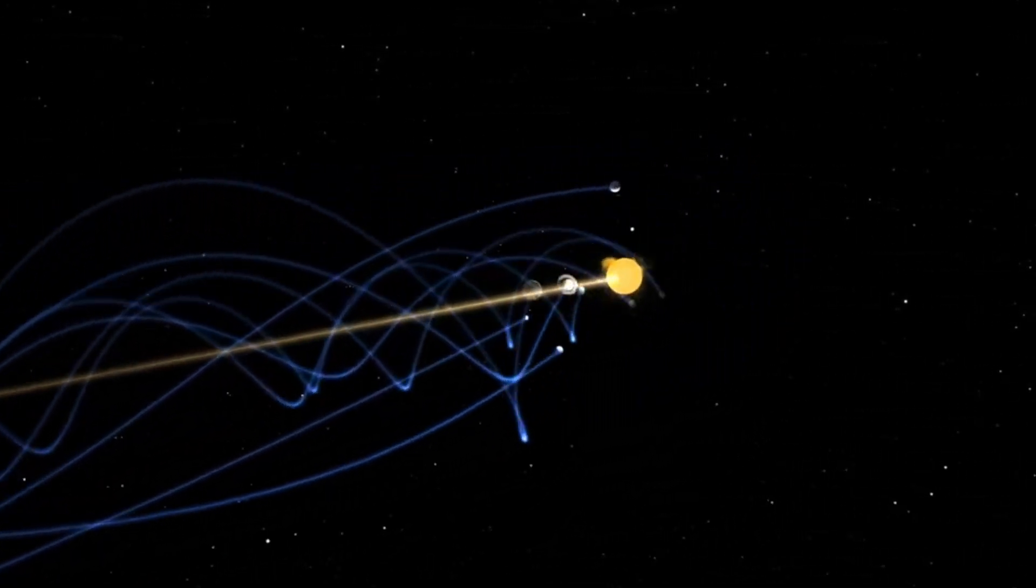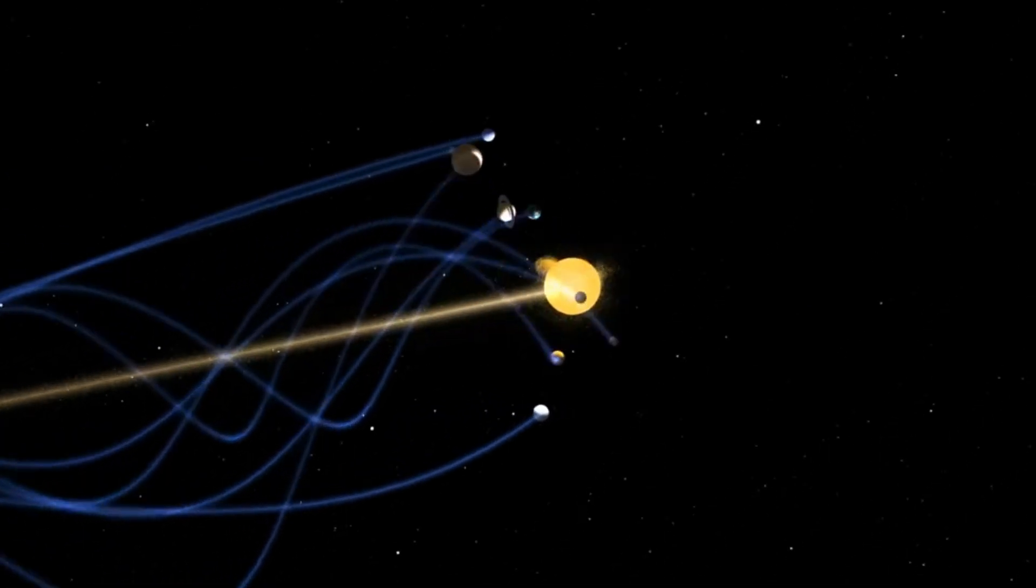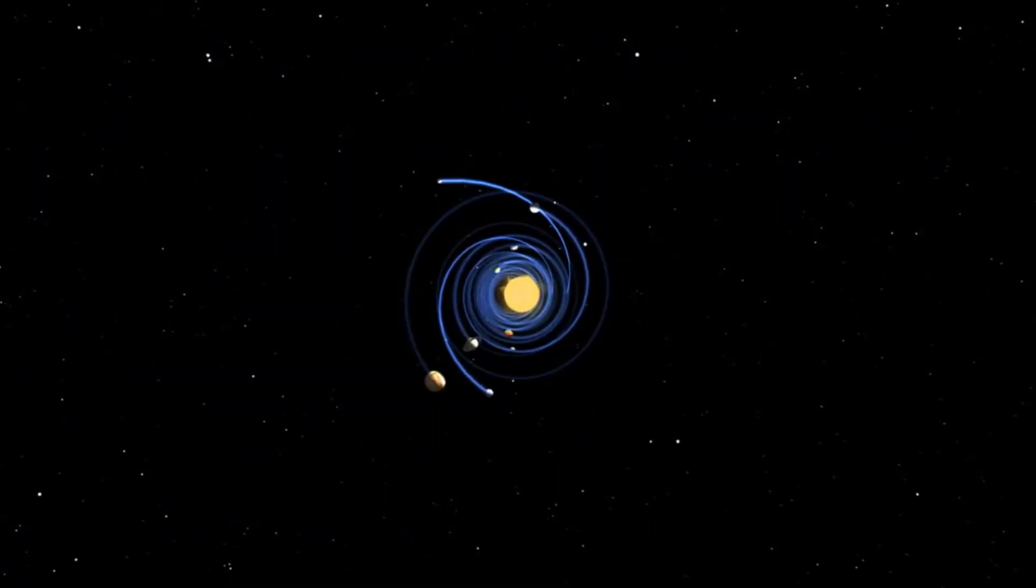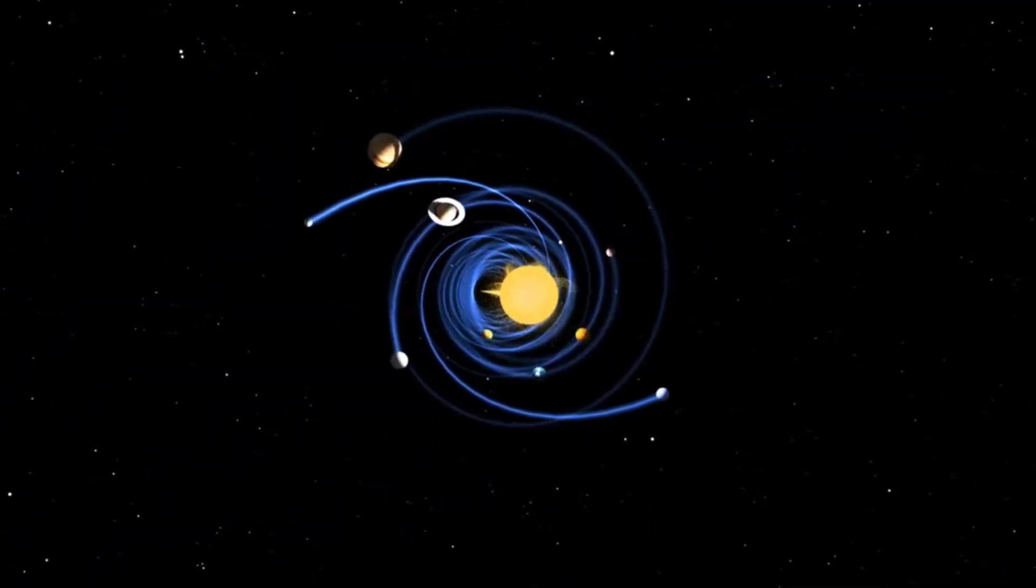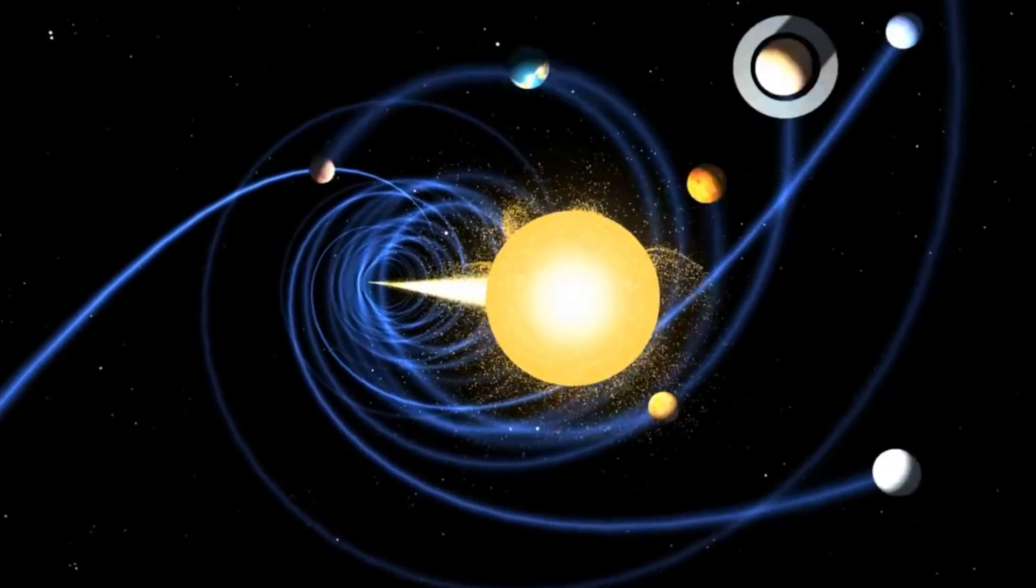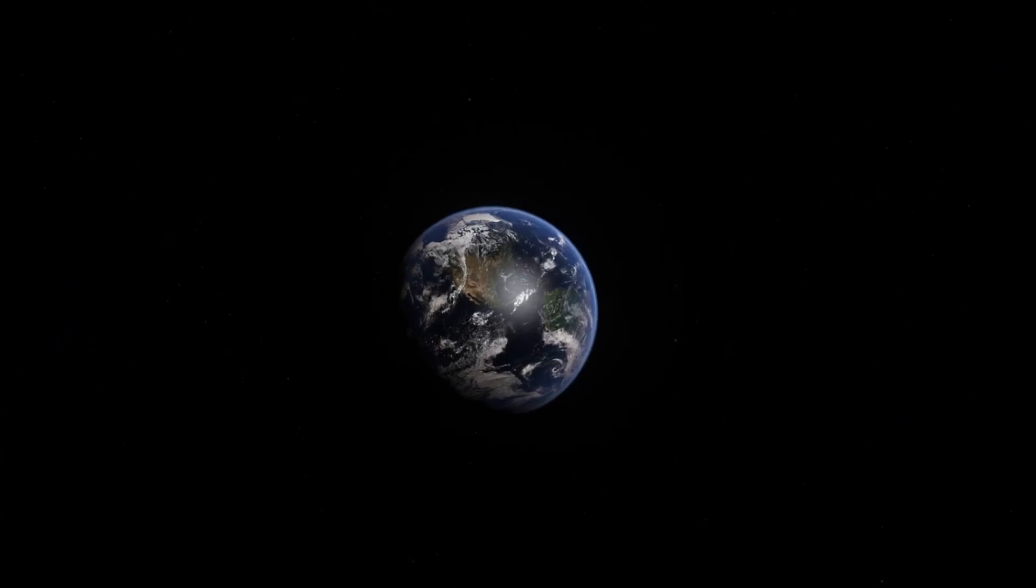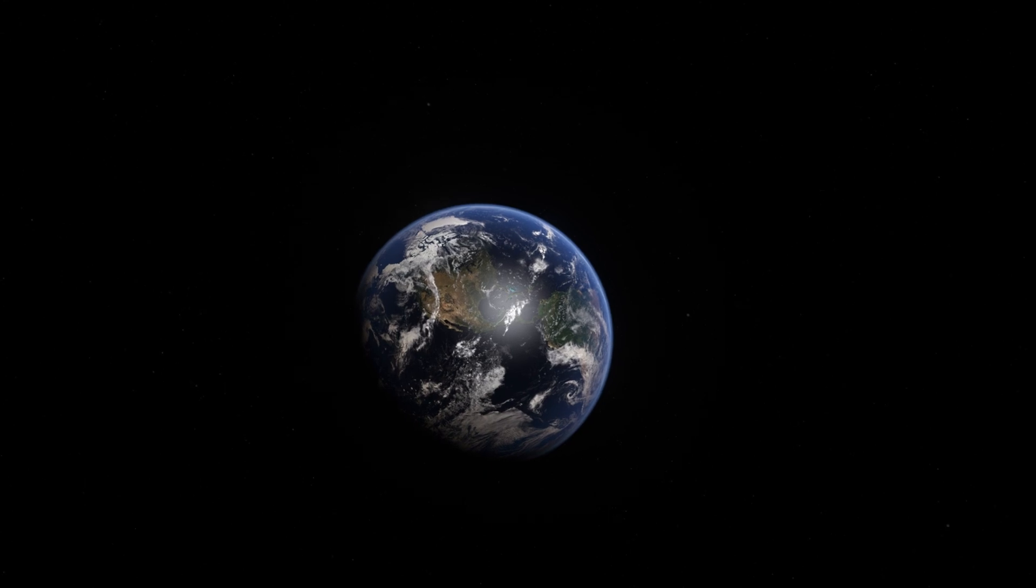The orbits of the planets cause them to spend half their year ahead of the Sun in the galactic orbit, while they lag behind it during the other half. In the case of the Earth, it's the farthest ahead of the Sun in September, while in March, it's farthest behind.